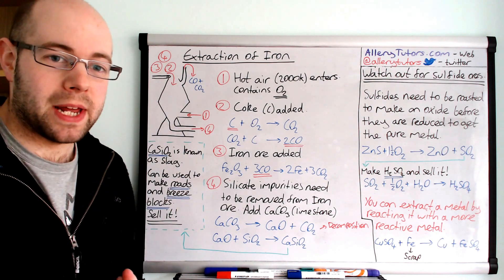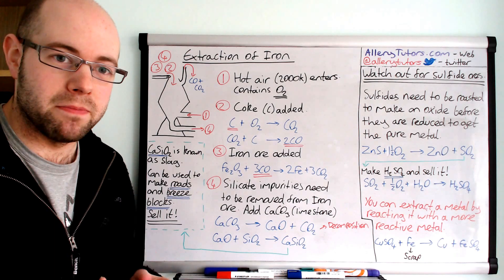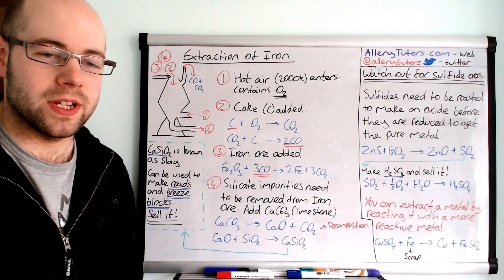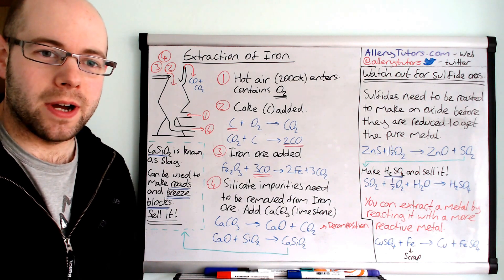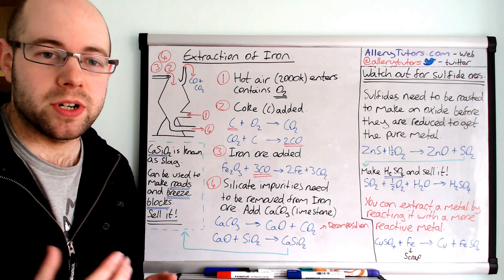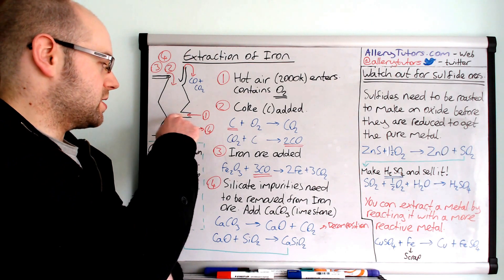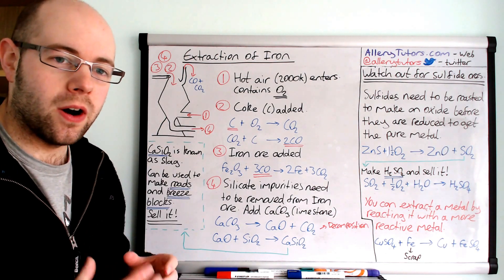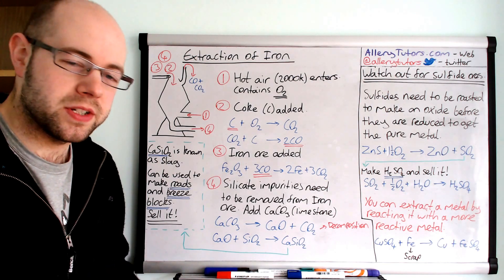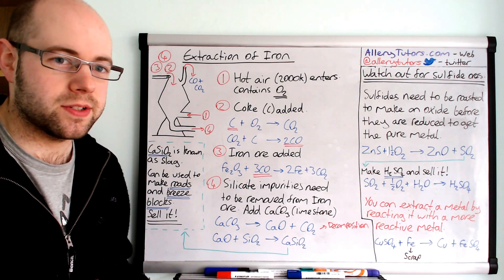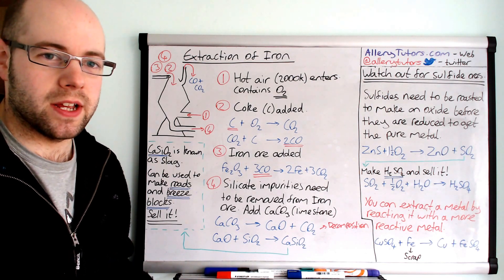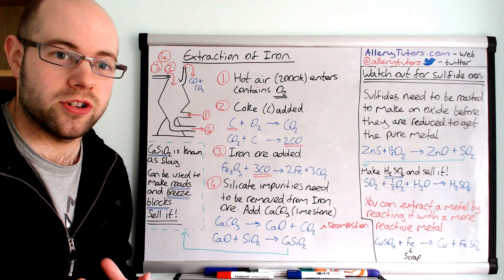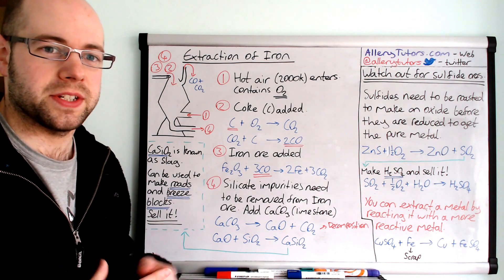So I've got a picture of a blast furnace and I've labelled it with numbers and I'm going to go through it step by step and you need to know the equations for this as well. So we're going to start with number one. Number one is this space at the bottom of the furnace here and this is where hot air is pumped into the furnace. The air is at 2000 Kelvin which is really hot and it enters into the bottom and it introduces oxygen into the furnace and that's the first step.